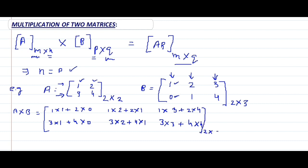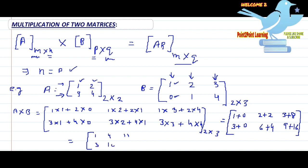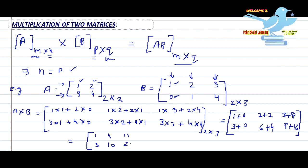The order of the result is two cross three. Now computing: one into one is one, two into zero is zero — one plus zero equals one. One into two is two, two into one is two — two plus two equals four. One into three is three, two into four is eight — three plus eight equals eleven. Three into one is three, four into zero is zero — three plus zero equals three. Three into two is six, four into one is four — six plus four equals ten. Three into three is nine, four into four is sixteen — nine plus sixteen equals twenty-five. The final result matrix is: one, four, eleven, three, ten, twenty-five, and its order is two cross three.